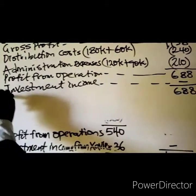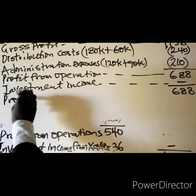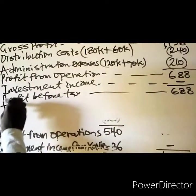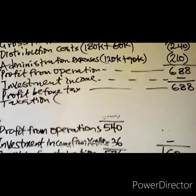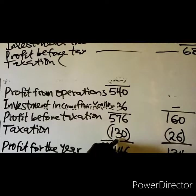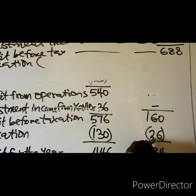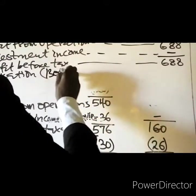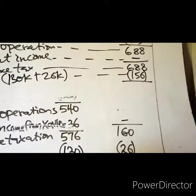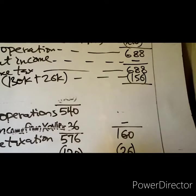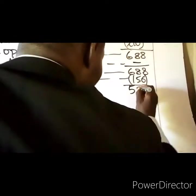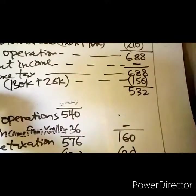Since the investment income is eliminated, the profit from operations of $688K represents profit before tax. Tax: parent's $130K plus subsidiary's $26K equals $156K. Deducting $156K from $688K gives profit for the year of $532K.